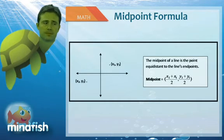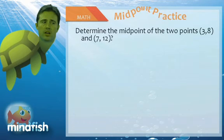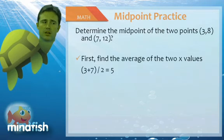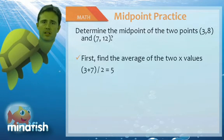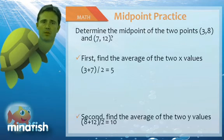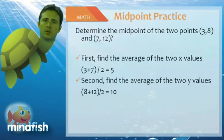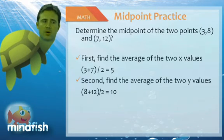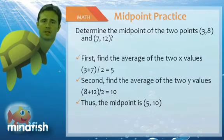So let's try a midpoint problem. So if we're trying to determine the midpoint of the two points 3 comma 8 and 7 comma 12, first we need to find the average of the two X values. 3 plus 7 is 10, divided by 2 is 5. And that is our X midpoint. Finding the average of the Y, or finding the midpoint for the Y requires averaging the Y values. 12 plus 8 is 20, divided by 2 yields 10. So our midpoint would be the point 5 comma 10.